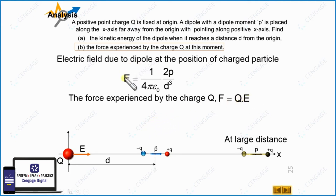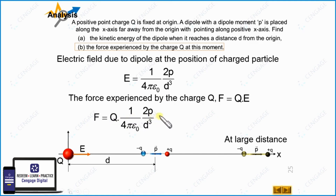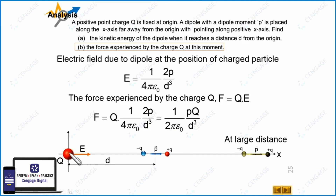So the force experienced by the charge particle equals Q multiplied by 2p/(4πε₀d³), which gives F = 2pQ/(4πε₀d³), directed in the rightward direction. And if you ask what is the force experienced by the dipole due to this charge particle — it will be in the leftward direction with the same magnitude, because electrostatic forces always occur in pairs: equal in magnitude and opposite in direction. This is the final result.